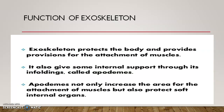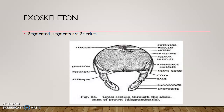The exoskeletal covering protects the body and provides attachment for the muscles. It gives internal support through in-foldings called apodemata, which not only increase the area of muscle attachment but also protect the soft internal organs. The exoskeletal covering is segmented; its segments are called sclerites. In the abdominal region, there are dorsal and ventral sclerites.